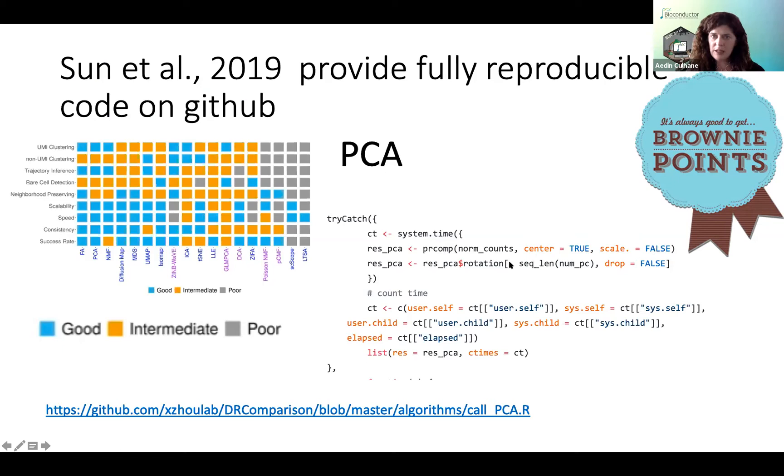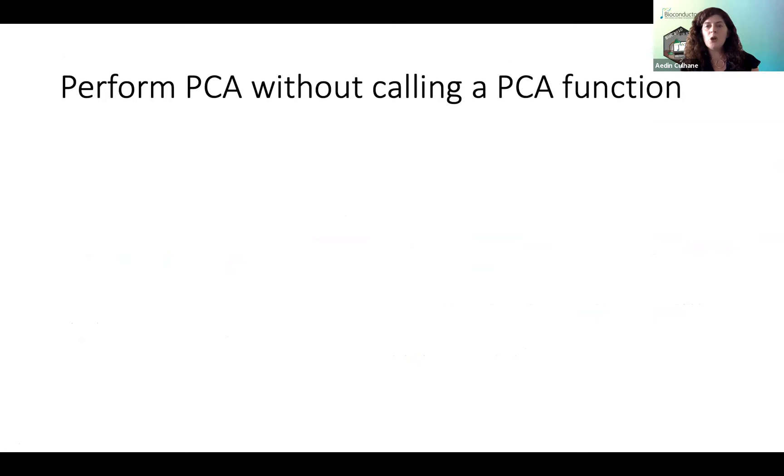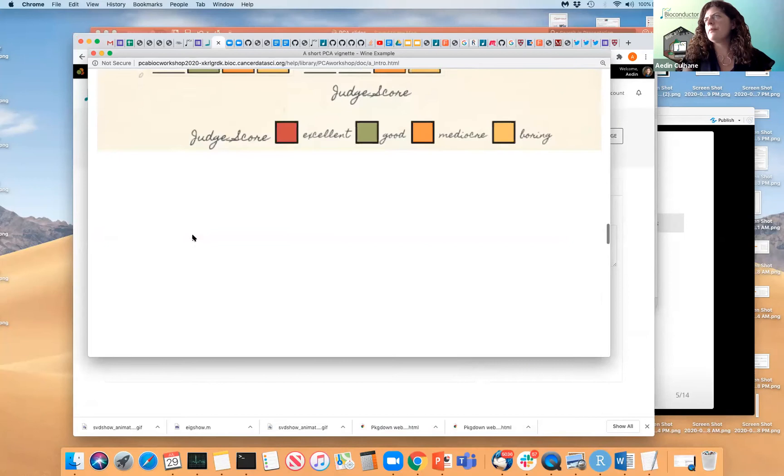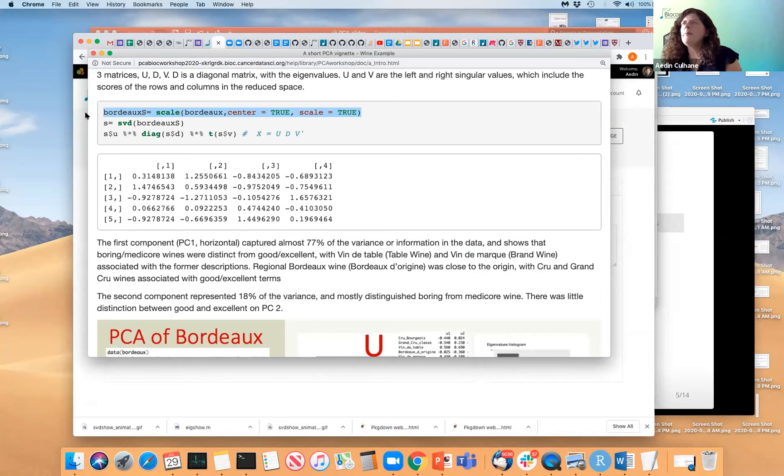So what I would like you to do is to go back to the Wine et al. data set and do the PCA. So basically do scale equals true, and center equals true, scale equals true, or just center equals true, scale equals false, and then do an SVD. And that is doing a correlation or covariance or correlation based PCA. And when you have that done, just upvote, Lauren, is there something in the poll for them to upvote? I will add something in a second. Is there questions?